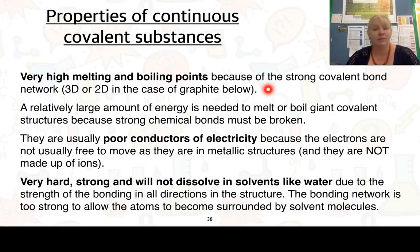They have very high melting points and boiling points because of those strong covalent bonds between them. They have a relatively large amount of energy required to melt or boil those structures, and that's why we end up with these high melting points and boiling points. They are usually poor conductors of electricity because the electrons are not free to move as they are in metallic structures, they're not made up of ions. They're very hard and strong and will not dissolve in solvents like water. The reason for this is due to the strength of the bonding in all directions of the structure. The bonding network is too strong to allow the atoms to become surrounded by solvent molecules.